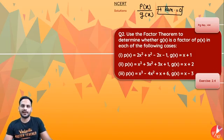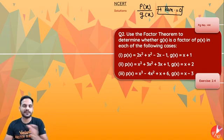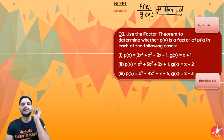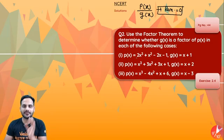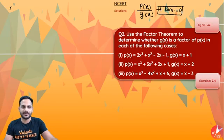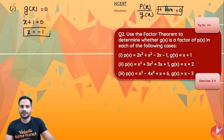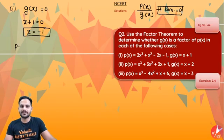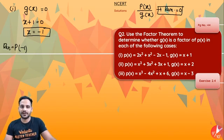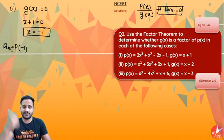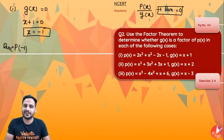We need to check whether the remainder is 0 or not. The first step is to make the divisor equal to 0 — that is, make g(x) = 0. So x + 1 = 0 gives x = -1. The remainder will be the value of the dividend p(x) at x = -1. If the remainder equals 0, g(x) is a factor of p(x); if not, it is not a factor.